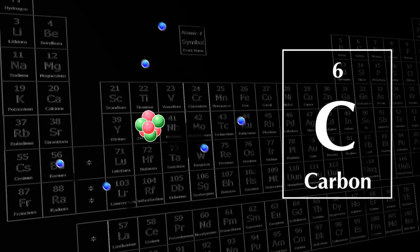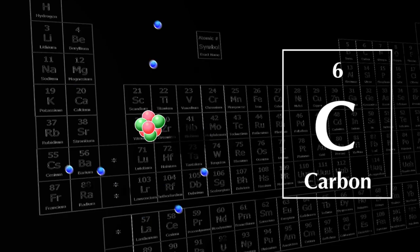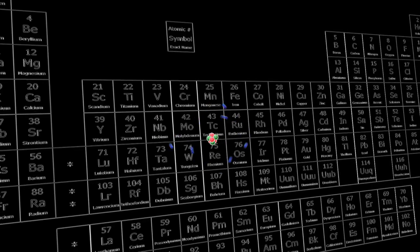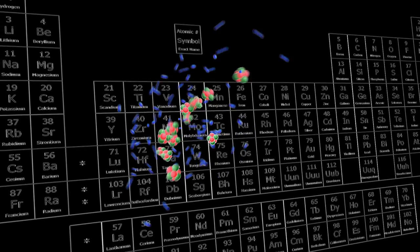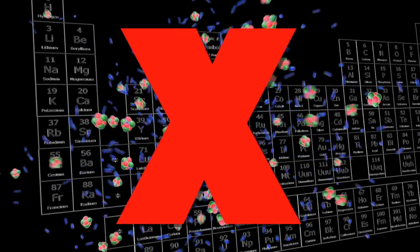So if all organic matter is made of carbon, then new carbon must be being made all the time, right? Wrong! In fact, all carbon that's on the Earth today has been around since, well, pretty much forever. That means that carbon has to be recycled and reused on a constant basis.